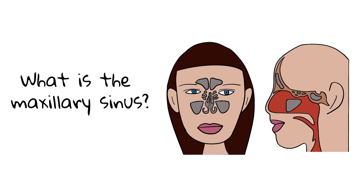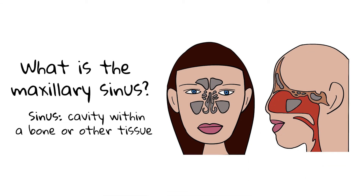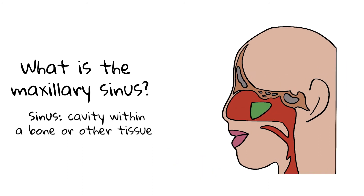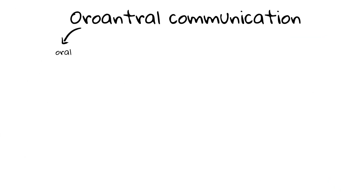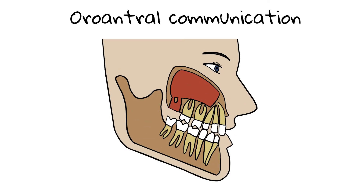What is the maxillary sinus? A sinus is a cavity within a bone or other tissue. The maxillary sinus is the largest of the paranasal sinuses. It is pyramidal in shape, with the base of the pyramid towards the anterior part of the face and the apex towards the posterior. 'Oral' stands for oral, and 'antrum' is another name for the maxillary sinus. Therefore, an oral antral communication, or OAC, is the communication between the oral cavity and the maxillary sinus.